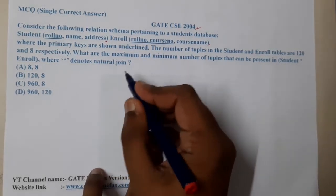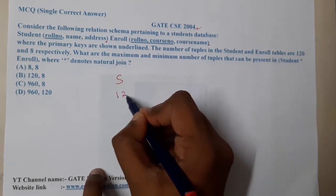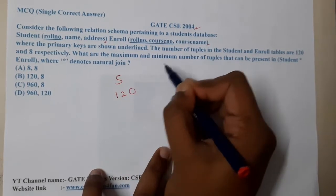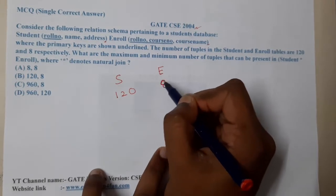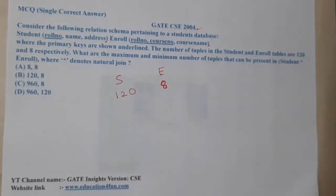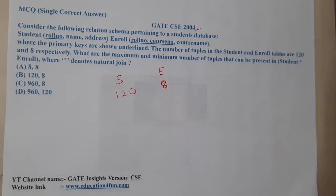In the Student table there are 120 entries, whereas in Enrollment there are 8 entries. So indirectly, there are 120 total students but only 8 students enrolled for courses.